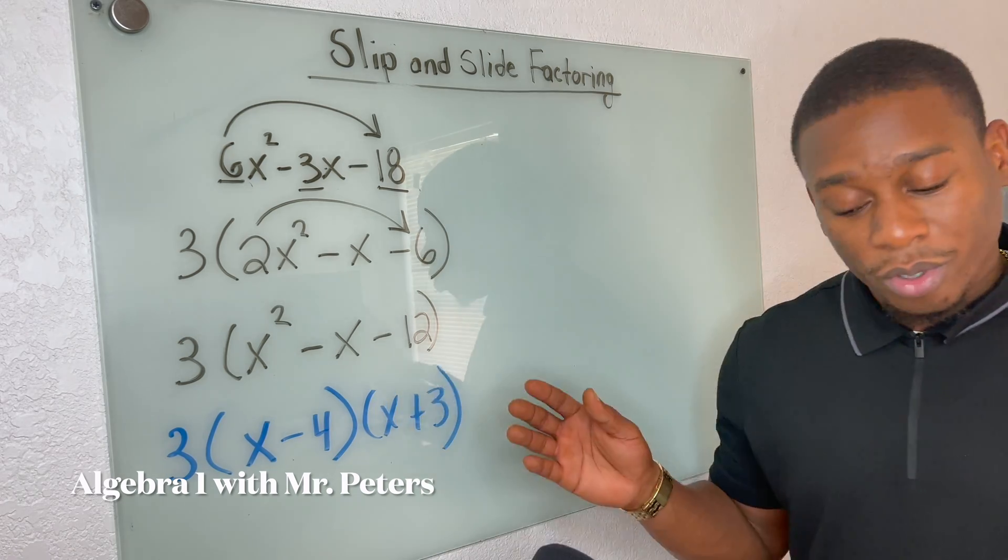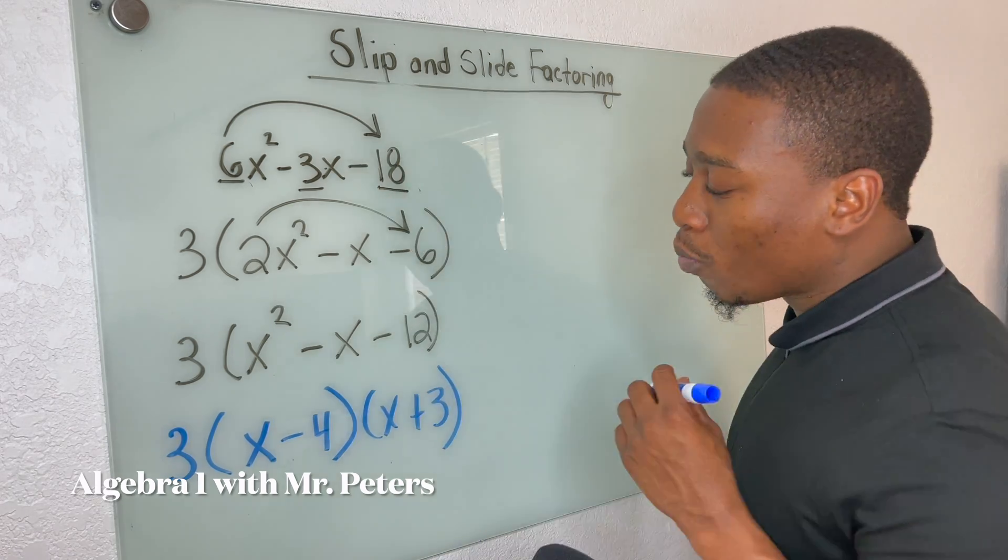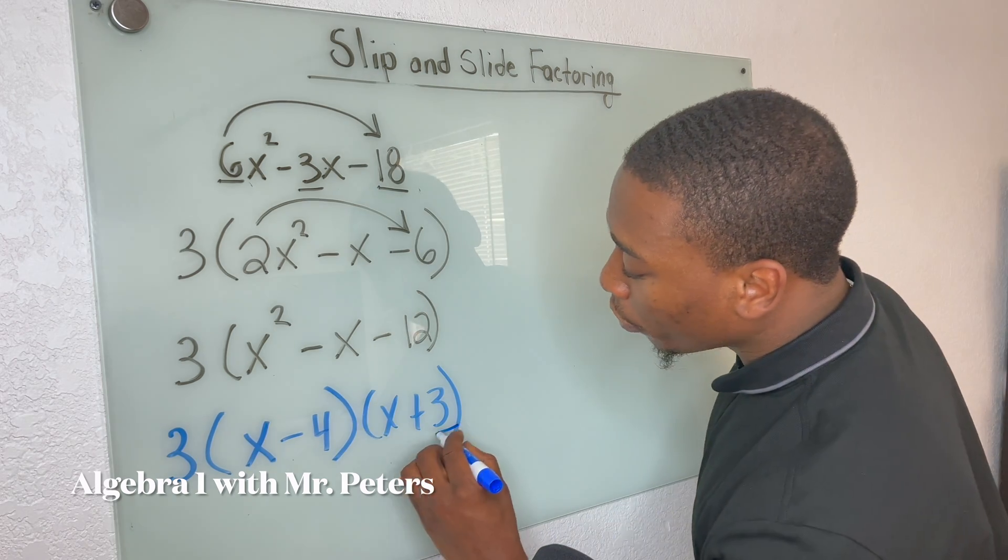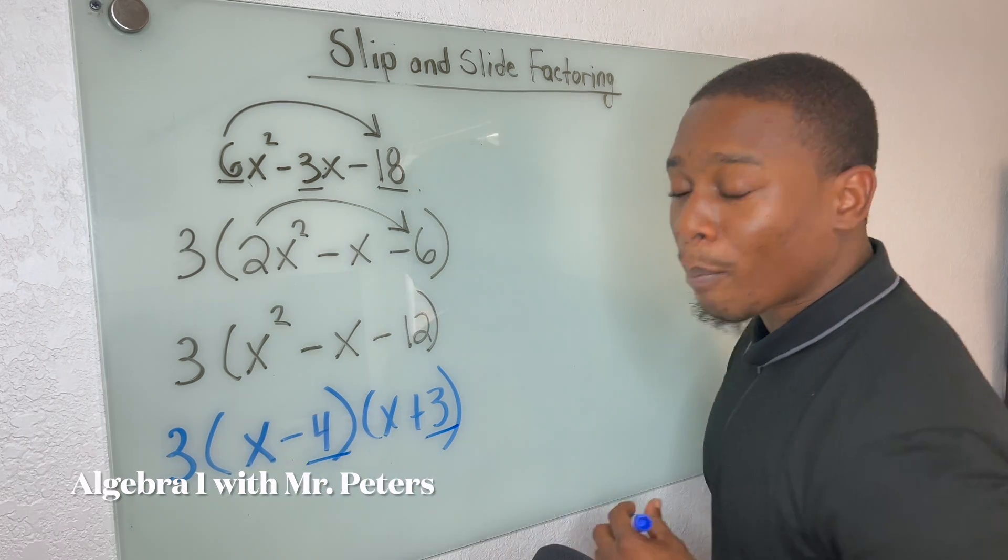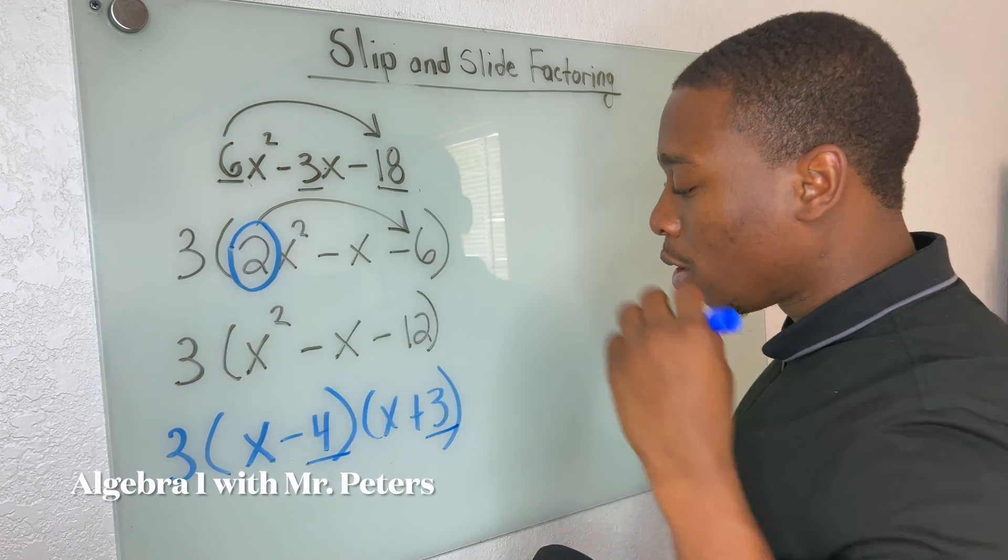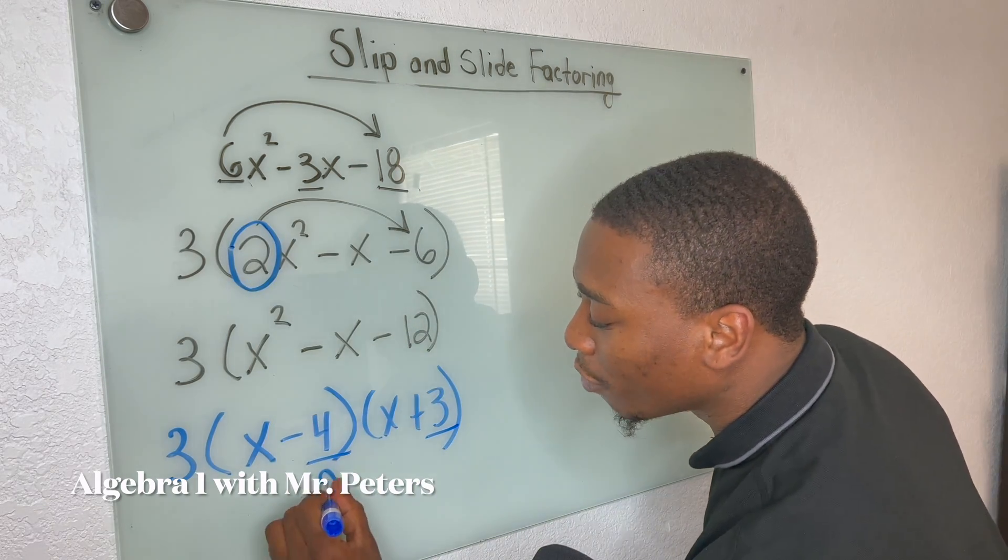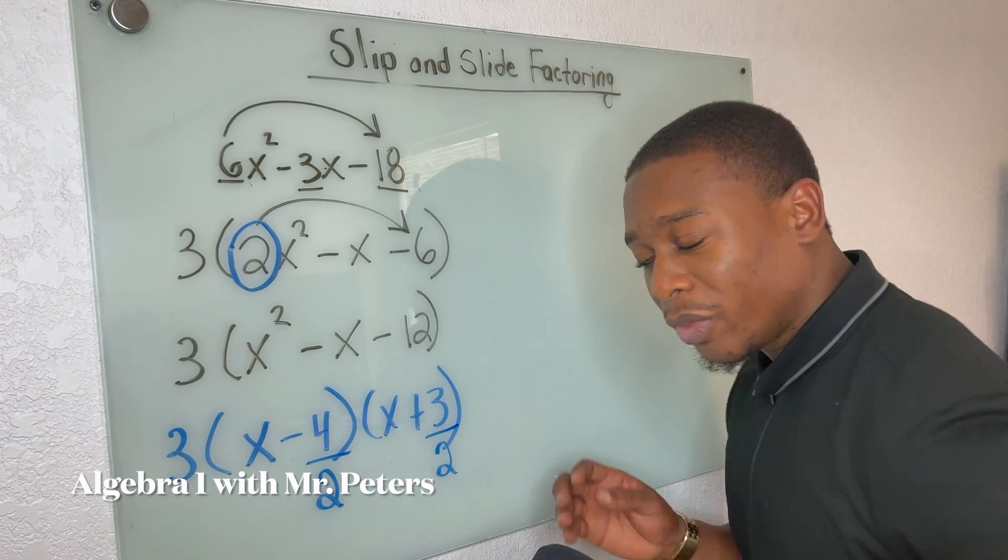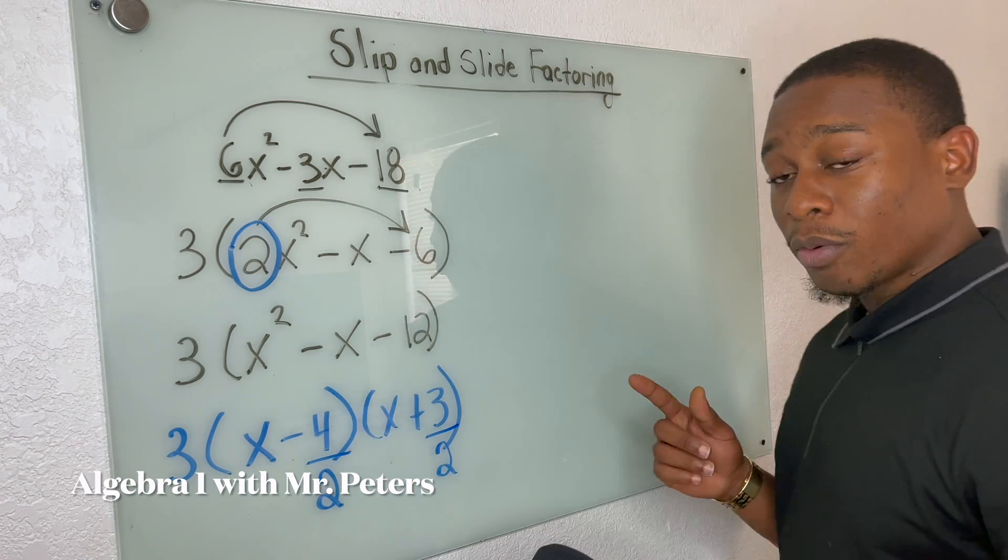No, no, no. We have to now go back and divide both of our factors by that A term we multiplied by. So two. So when I go through now and I divide by two, this is how we're going to finish off the problem.